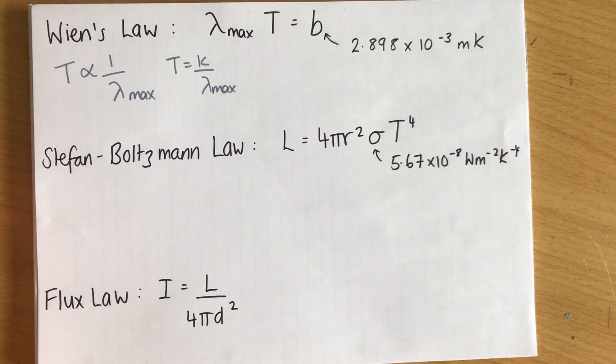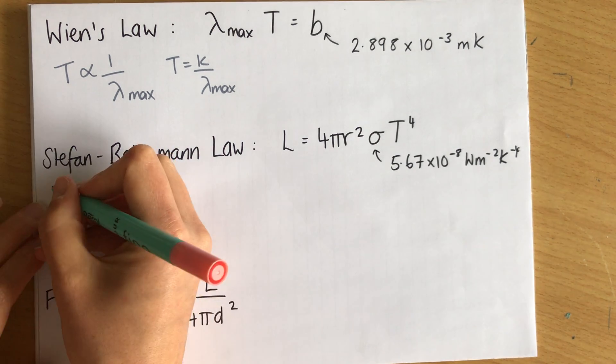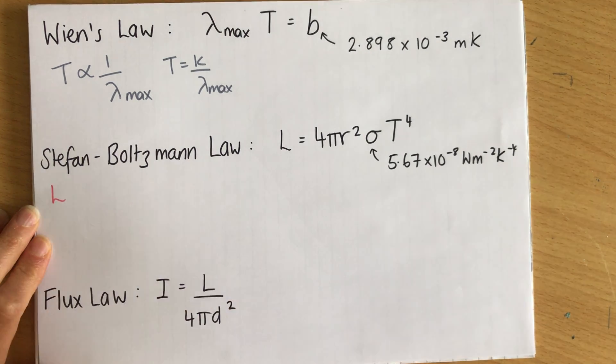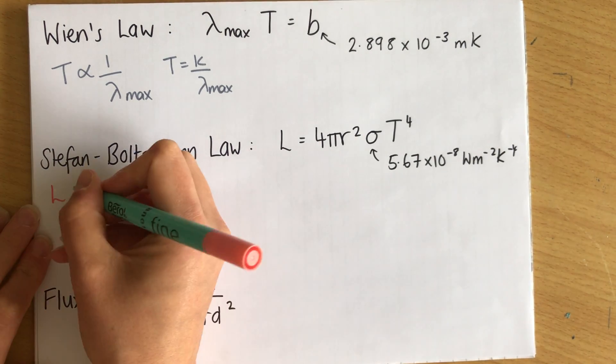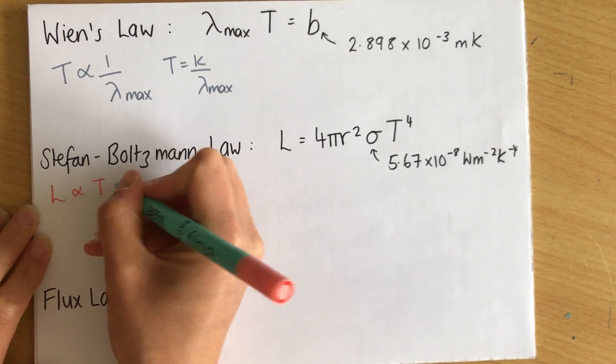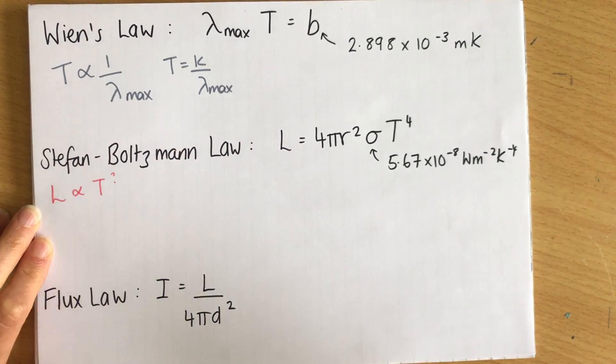Now the Stefan Boltzmann law comes from the idea of what luminosity is. Now luminosity, if you look at previous videos, is the power output of a star. It's how much energy it emits per second. And it is proportional to the temperature of the star in some way. The hotter the star, the more luminous it is,